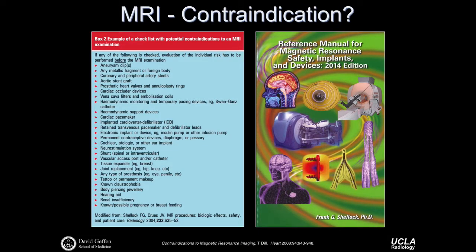Whether something forms an absolute contraindication — meaning patients should not undergo an MR exam — is relatively complicated and requires understanding the specific device or implant. There is a handbook or reference manual for magnetic resonance safety in implants and devices, where you can look up specific devices and find out whether a device is a known contraindication. While not all devices are mentioned, it is relatively comprehensive.